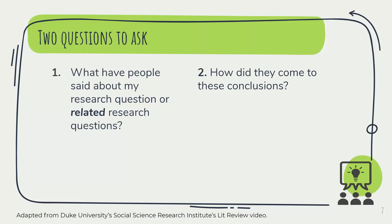The second question you should ask is: how did the authors come to these conclusions? You are now honing in on the data they used or the methods they used. This allows you to see where their information came from, their methodology, and allows you to maybe replicate it with alterations based on your own research or come up with new methodology that would shed light on the topic in a different way.